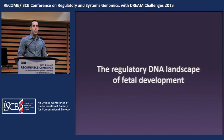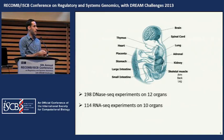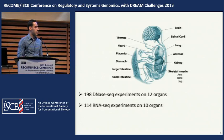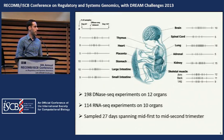The developmental patterns of regulatory DNA have been extensively studied in model organisms but have not been systematically mapped in humans. To address this deficit, we performed nearly 200 DNAseq experiments on 12 different organs from human fetuses, spanning all major organ systems, and in addition performed 114 separate RNAseq experiments on 10 of these organs. These experiments were done over time, sampling 27 different days spanning weeks 9.5 to 21 of gestation.